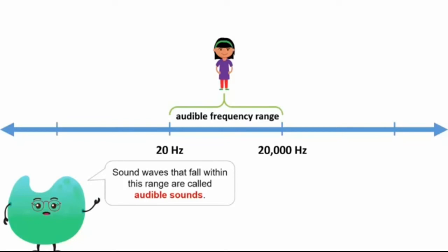Sounds of frequency below 20 hertz and beyond 20,000 hertz are inaudible to the human ear. Sounds above 20,000 hertz are called ultrasound, while sounds below 20 hertz are called infrasound.